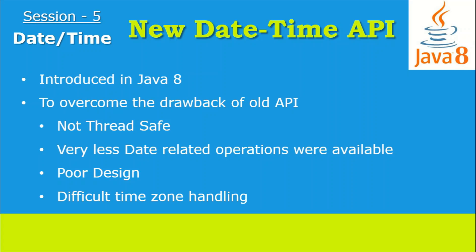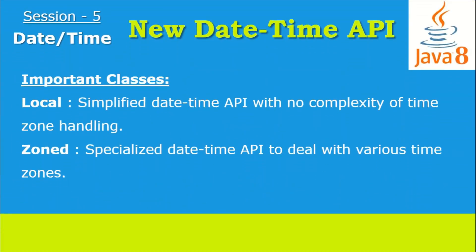The second issue is fewer operations — in the old API there are only a few date operations, but in the new API they have provided many date operations. The third issue was poor design of the old API. The next was difficulty with time zone handling, so developers had to write a lot of code to deal with time zone issues. But the new API has been developed keeping domain-specific design in mind, and time zone handling is much easier.